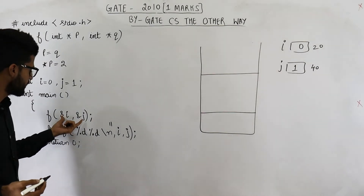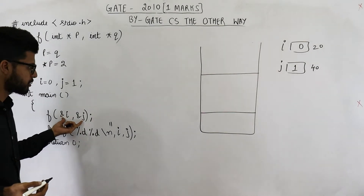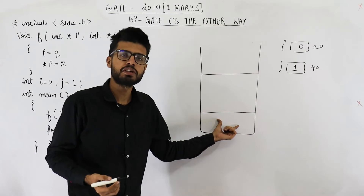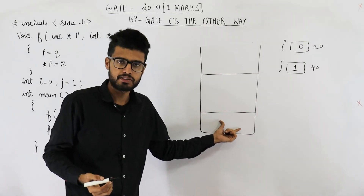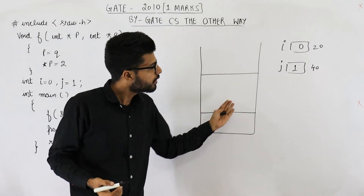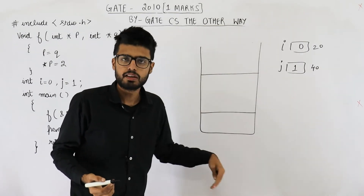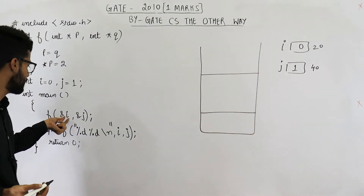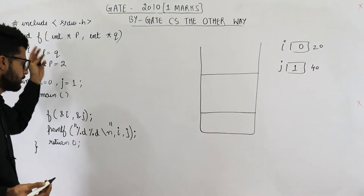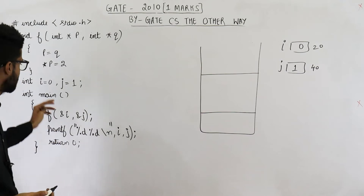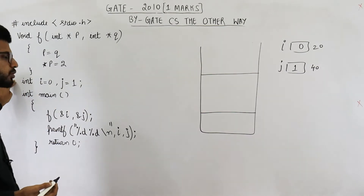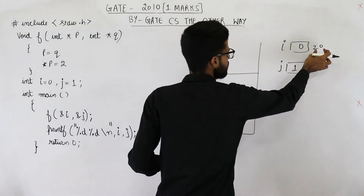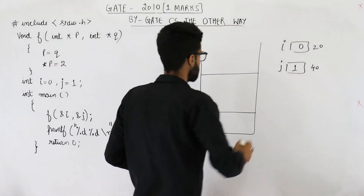To resolve these variable names, first you have to look in the activation record of the main function only. You cannot find any i and j there, so now look in the global space. Can you find any variables named i and j that are global? Yes, there are these two variables, so their addresses will be passed.